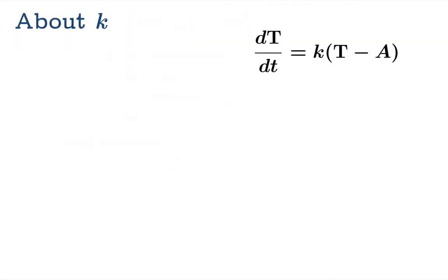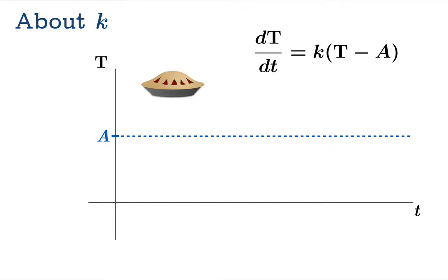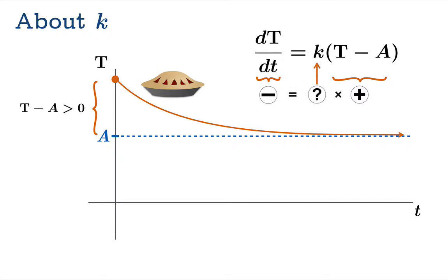Now let's talk about k. We can imagine, intuitively, that if we were to plot the horizontal line representing the ambient temperature and take a hot object out of the oven, then the temperature starts at a level that's greater than the ambient temperature and we would expect the object to cool off. This means that the derivative of the temperature with respect to time should always be negative. But we also know that the temperature of the object is greater than the ambient temperature, so this quantity is positive. What does that mean about k? Clearly k has to be negative.